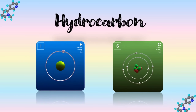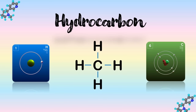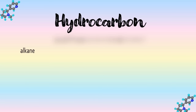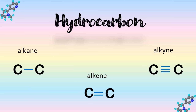Carbon forms more compounds than most other atoms and it is the primary component of organic compounds. One of these is hydrocarbons. Hydrocarbons are organic compounds that consist of hydrogen and carbon. Each hydrocarbon molecule consists of a carbon backbone with hydrogen attached to it. A single carbon atom can bond to four hydrogen atoms. There are different types of hydrocarbons which include alkanes, alkenes, and alkynes.